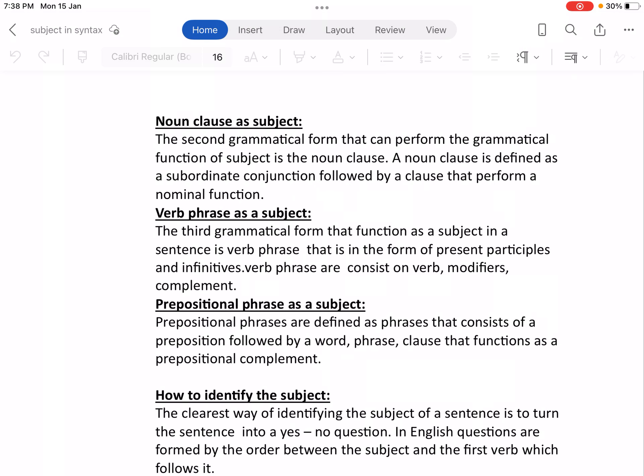Verb phrase as a subject. The third grammatical form that functions as a subject in a sentence is verb phrase that is in the form of present participle. Present participle has the first form of verb with -ing, and infinitives have 'to' before the first form of verb.